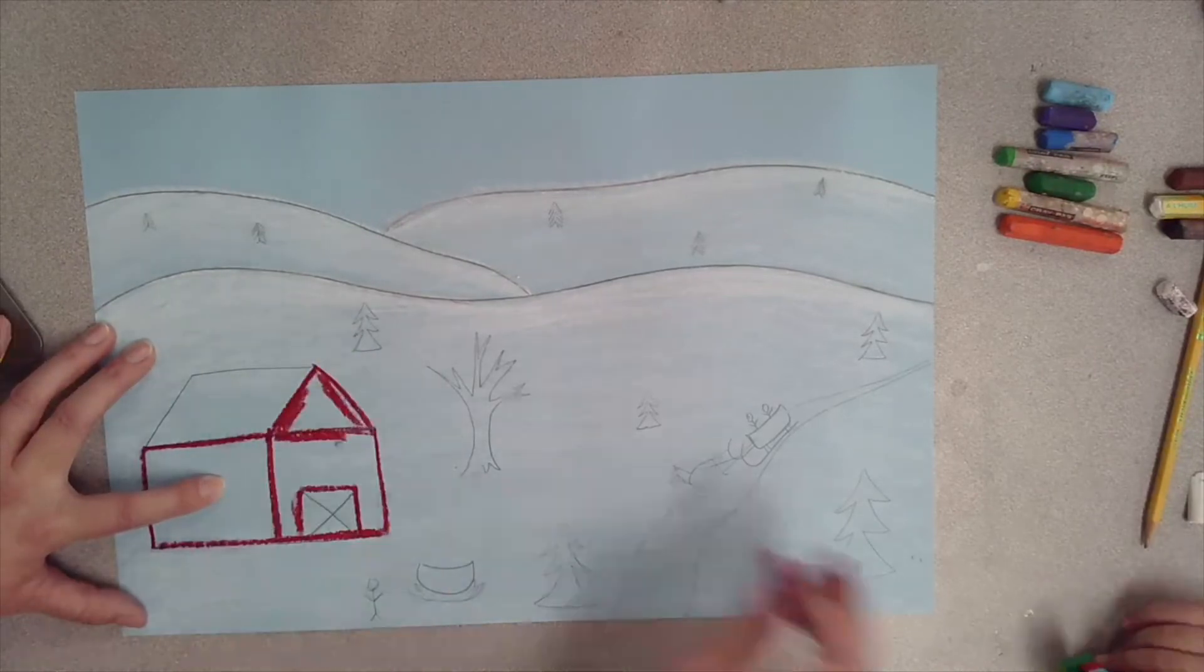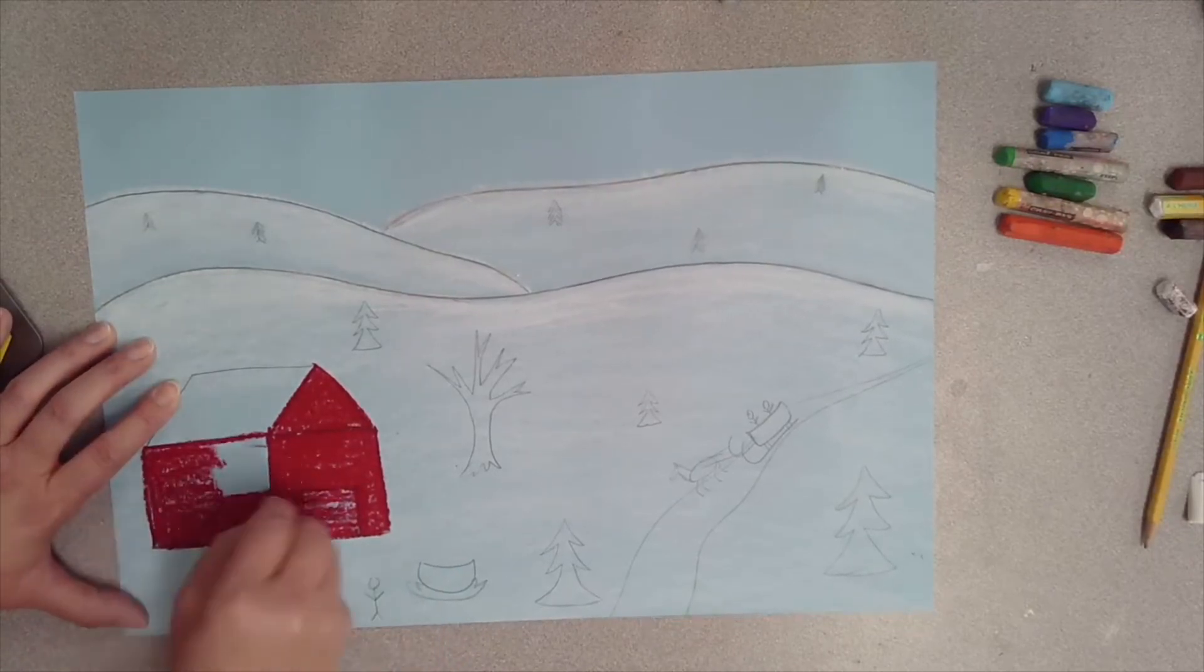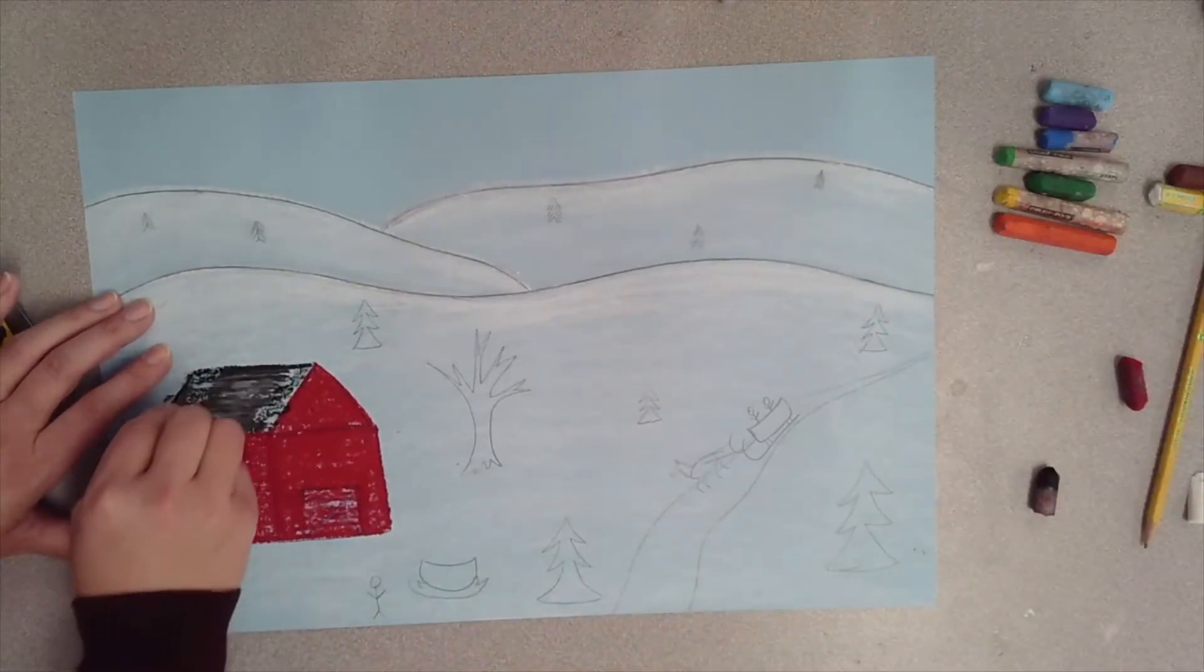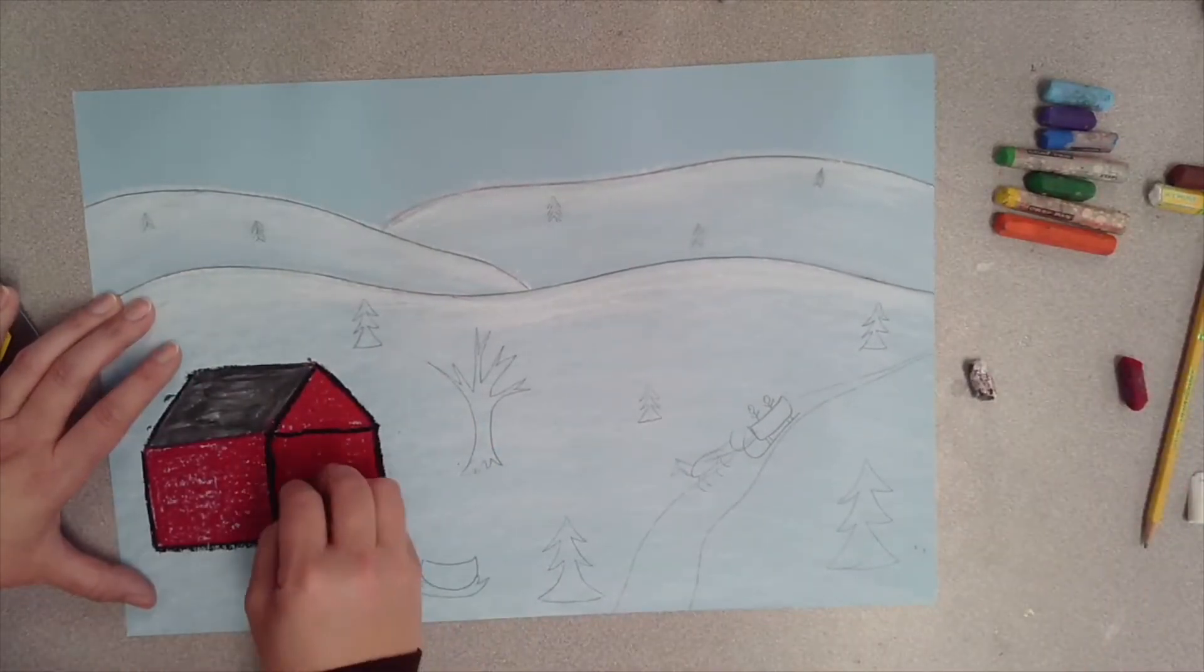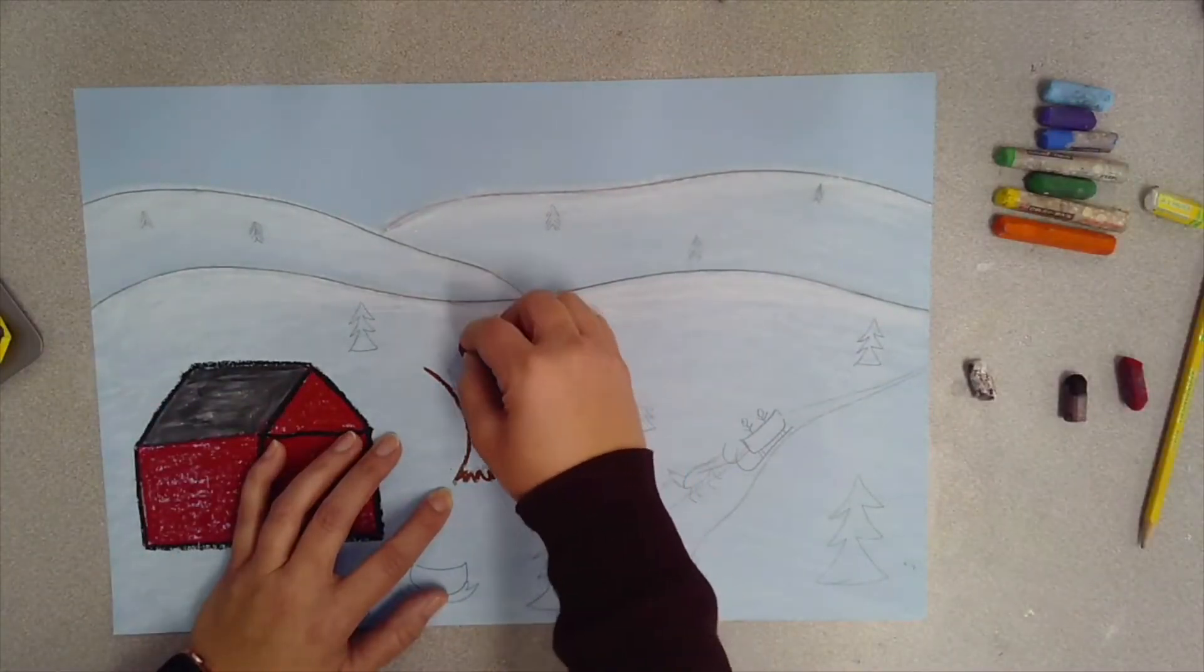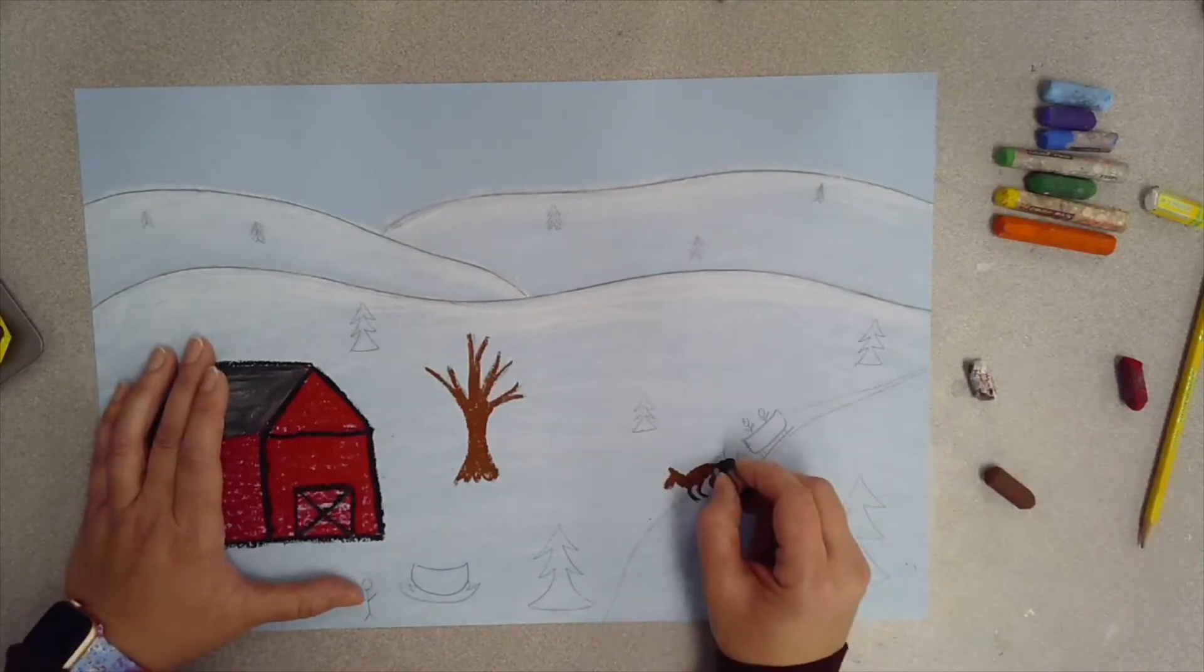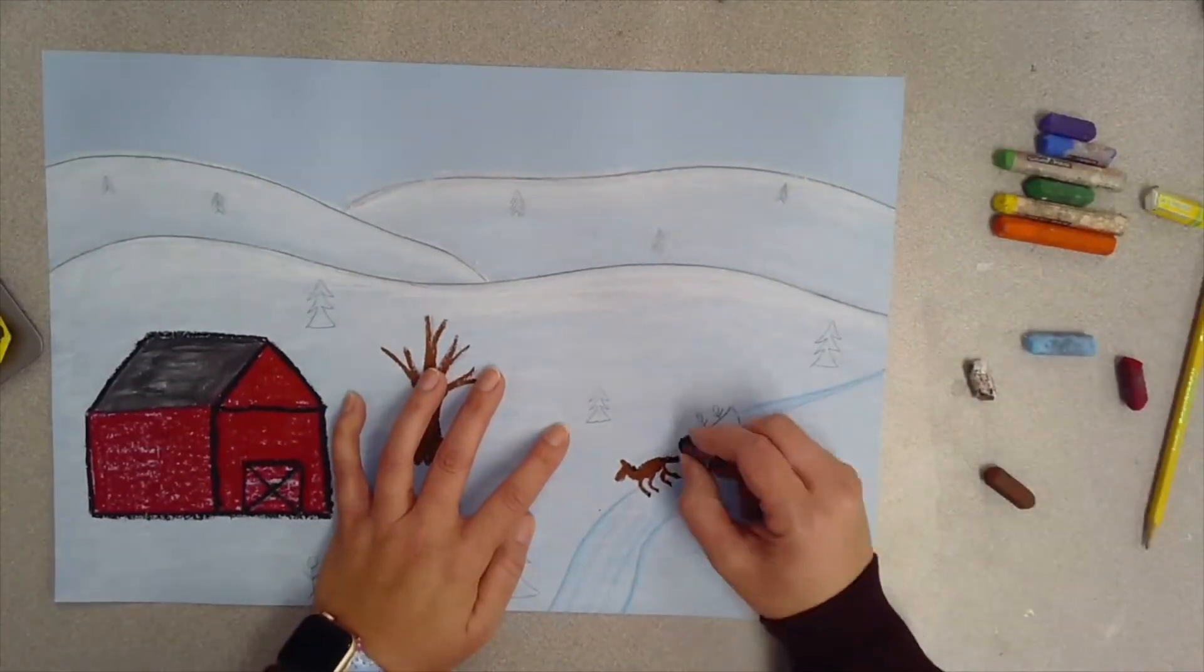Next we're going to use oil pastels to color in your picture. Use whatever colors you need to color in all the items. You can mix oil pastel colors by coloring lightly with two colors. That's what I did to make gray on my barn. You can even overlap black oil pastel on top of colored oil pastel because it's so dark. Make sure you color in each of the things that you drew in your picture. Try not to smear it.